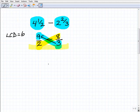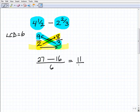3 times 9 is what? 27. Then I'm going to go minus, because this is a minus problem or subtraction problem. 2 times 8, which is 16. And then I'm going to multiply the denominators. That's my last step. That's 6. So that's 11 over 6. And that was the same answer we got.